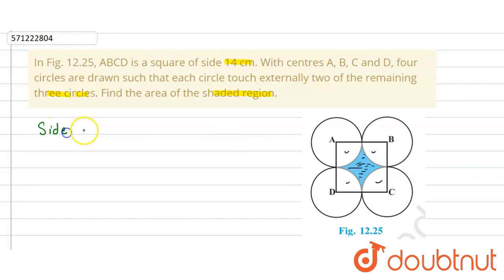So the side of square is equal to 14 centimeter. So first we name the points to be like P, Q here, and then that one is R and here it is S.